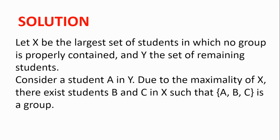Consider a student A in Y. Due to the maximality of X, there exists students B and C in X such that A, B and C is a group. If not, then we could put student A into set X, and X will no longer be the largest set of students in which no group is properly contained.